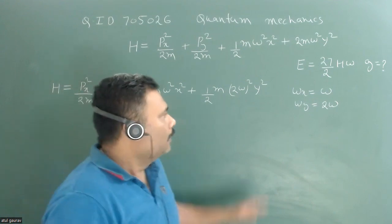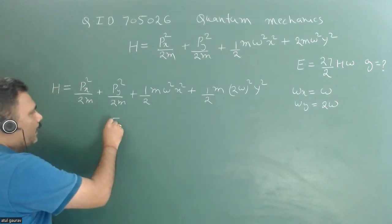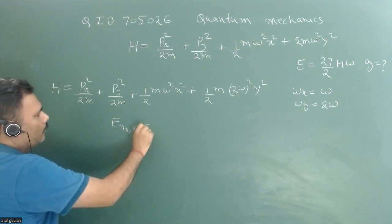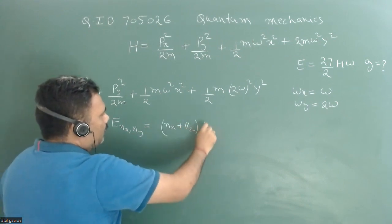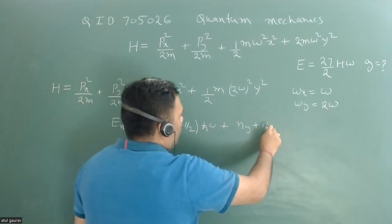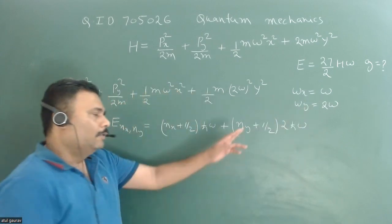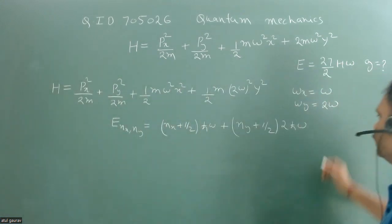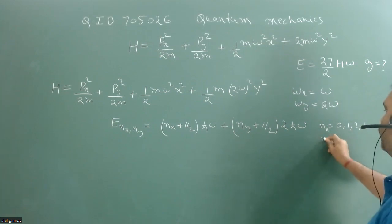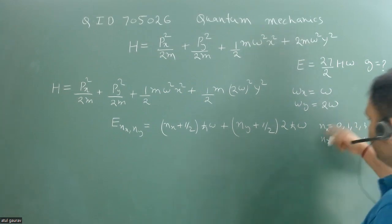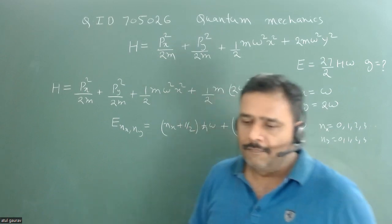The generalized energy eigenvalue has two quantum numbers nx and ny because we have two degrees of freedom. This value equals (nx + 1/2)ℏω + (ny + 1/2)·2ℏω. The allowed quantum numbers are nx = 0, 1, 2, 3, ... and ny = 0, 1, 2, 3, ... independently, since they are related to independent degrees of freedom.